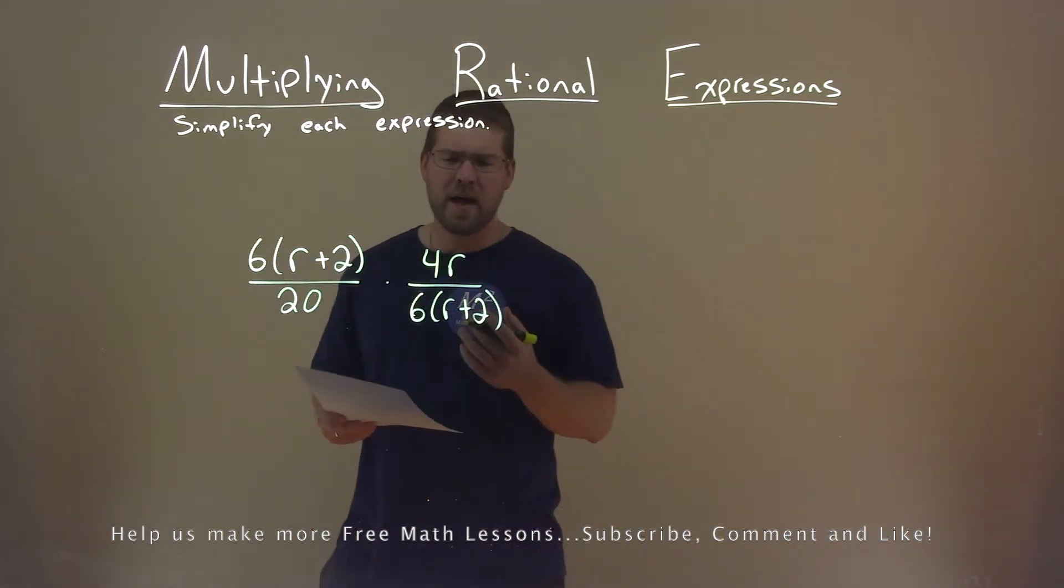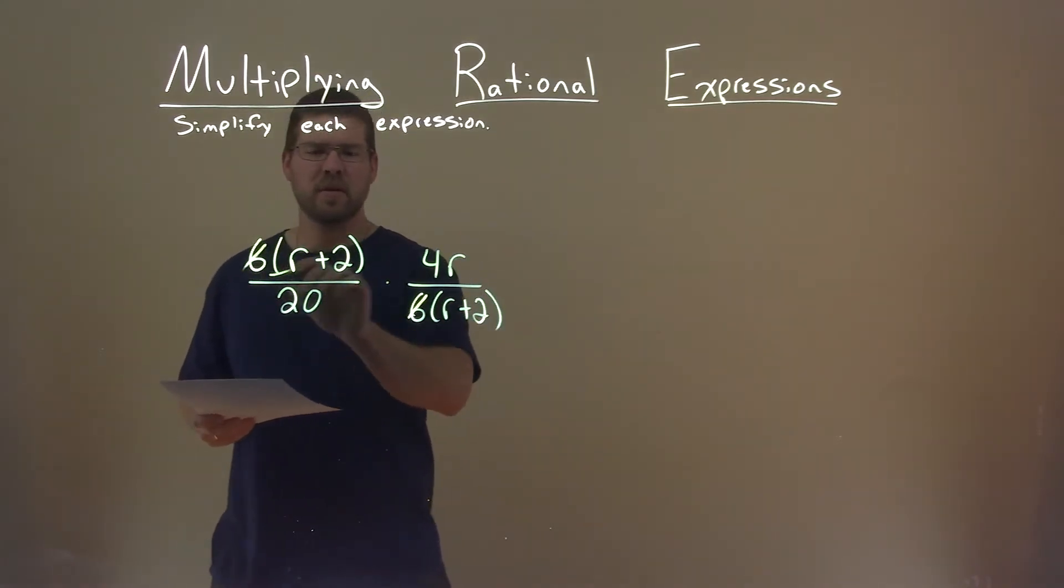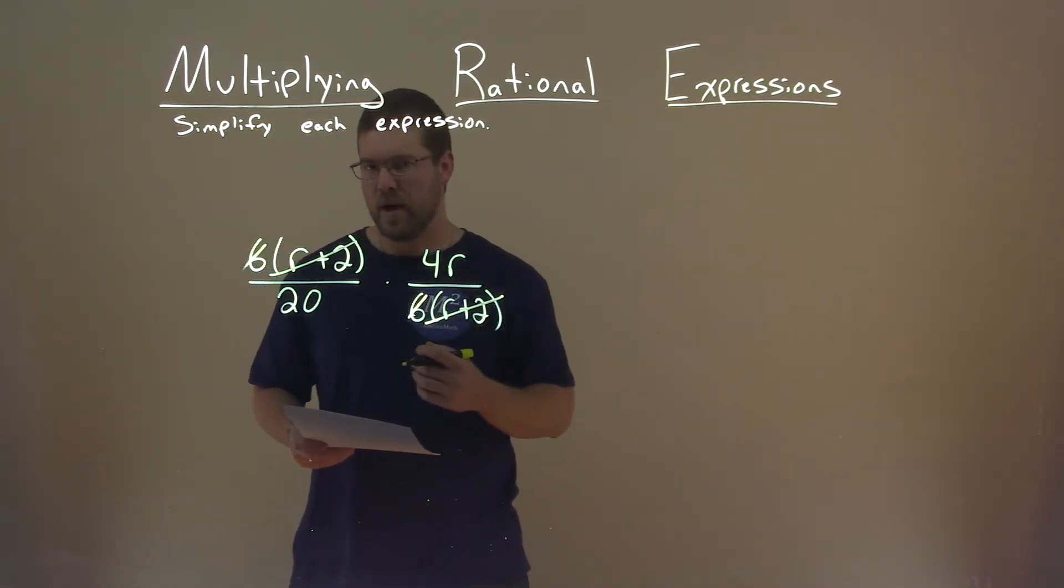Right off the bat, this actually looks fairly easy. We have a 6 here and 6 here, r plus 2 here, and r plus 2 here, we can cancel them out.